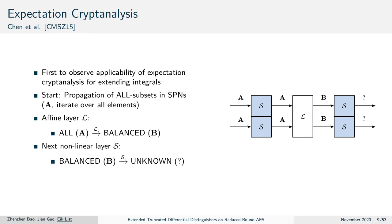So they deserved the credit for that. Their core observation was that an integral distinguisher usually ends with some linear operation. It starts with the propagation of some all-subsets — meaning all values in a certain subset — in substitution-permutation networks. A set of texts iterates over all values. At the end of an integral distinguisher, a linear layer adds these components and destroys this all-property, but still transforms it into some other balanced or zero-sum property.